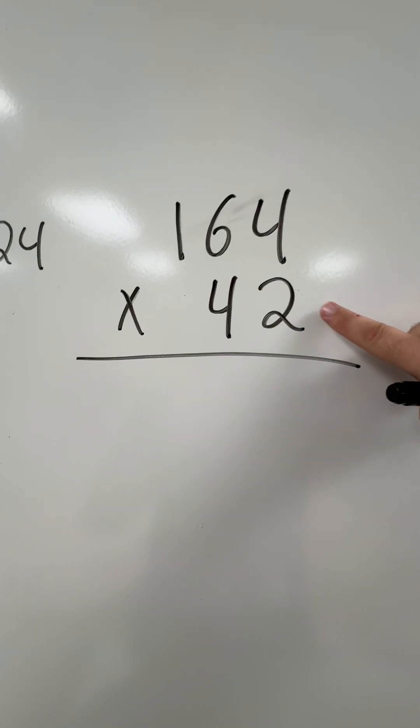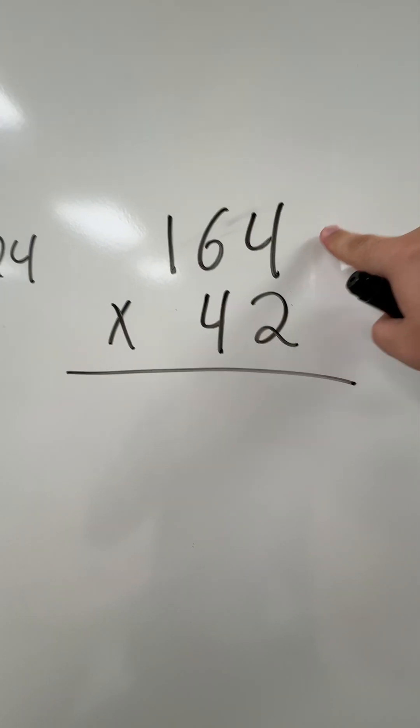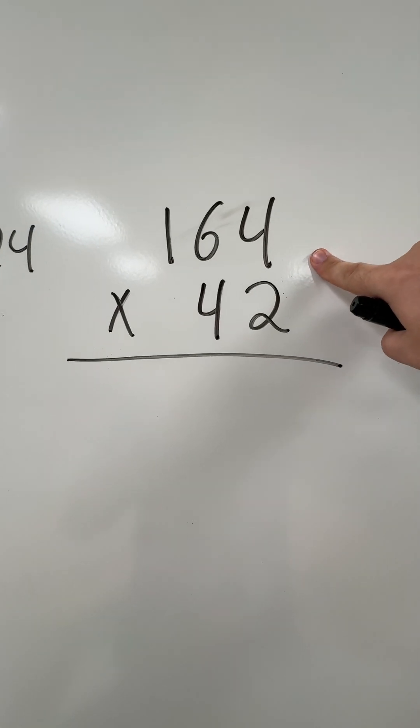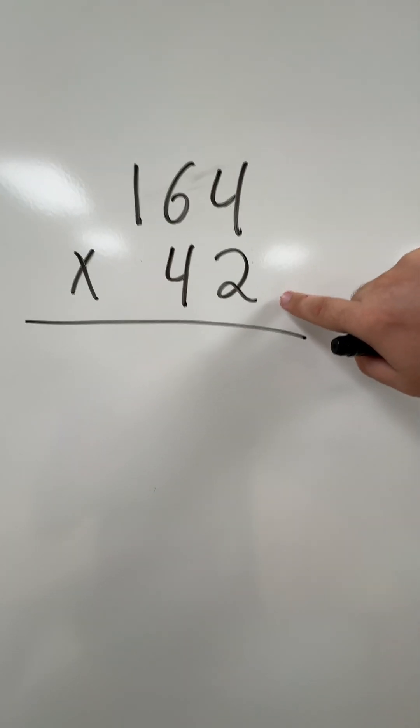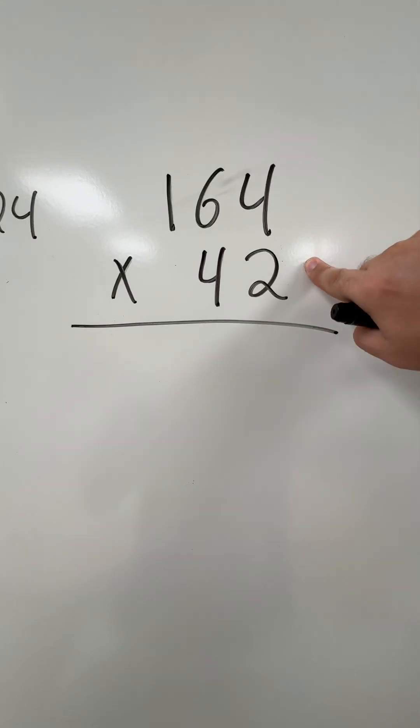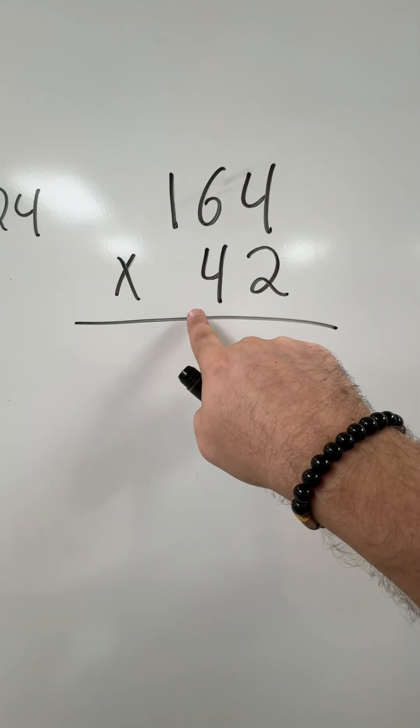If I'm multiplying a two-digit number by a three-digit number or higher for standard algorithm, I'm going to start, as we do most of the time, with the ones place. I'm only going to worry about the two right now and not worry about the four.